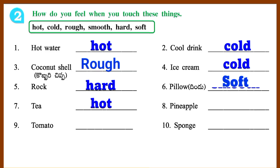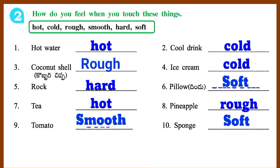7. Hot. 8. Pineapple — Rough. 9. Tomato — Smooth. 10. Sponge — Soft.